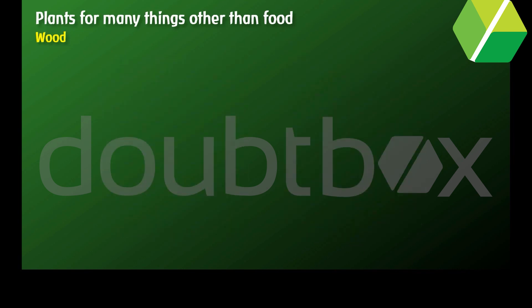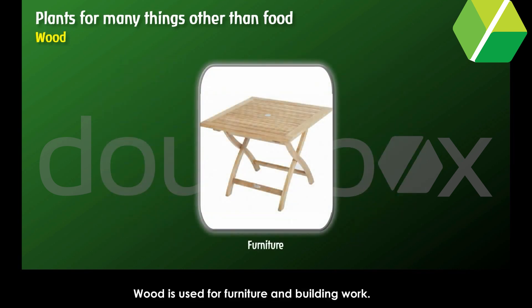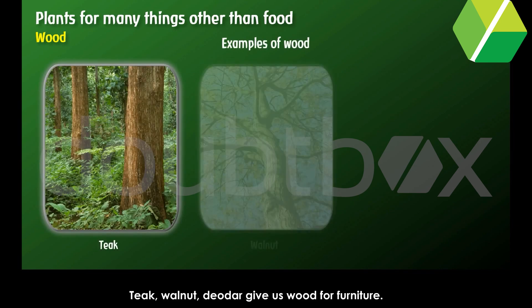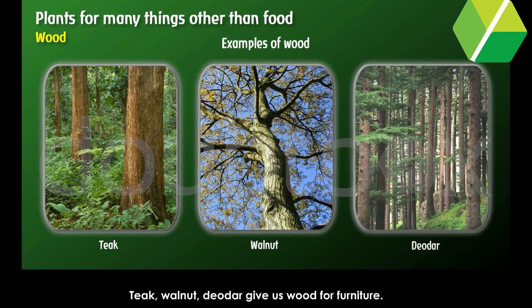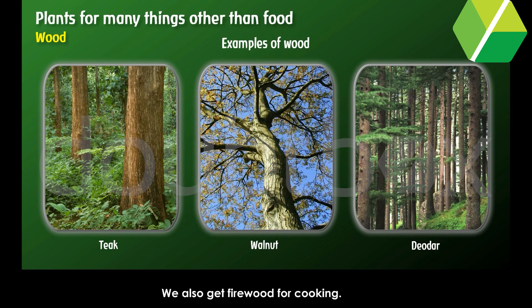Wood: Wood is used for furniture and building work. Teak, walnut and deodar give us wood for furniture. We also get firewood for cooking.